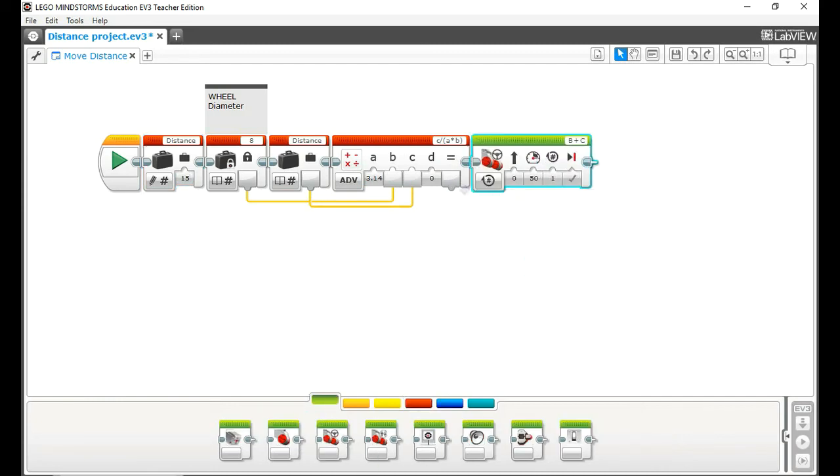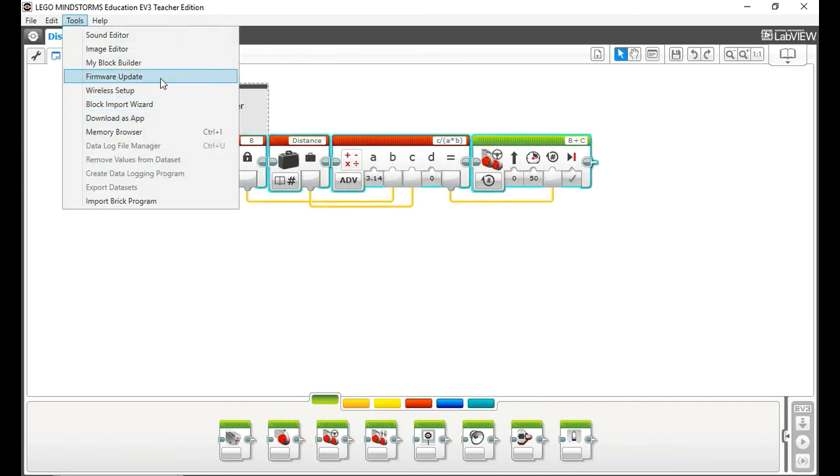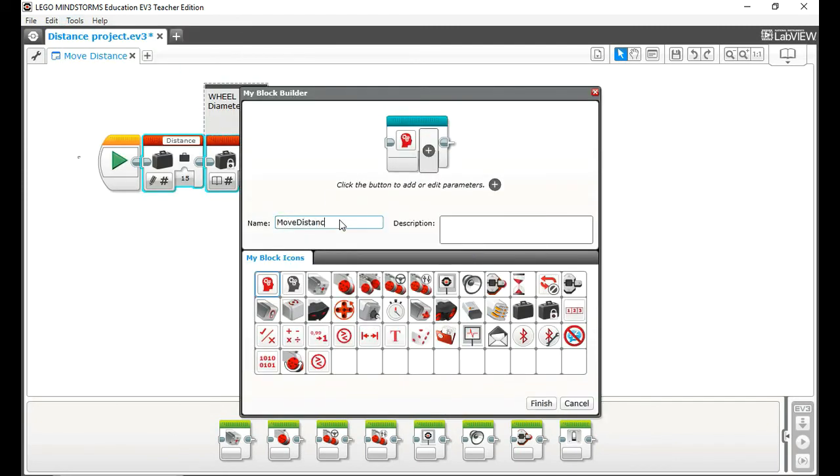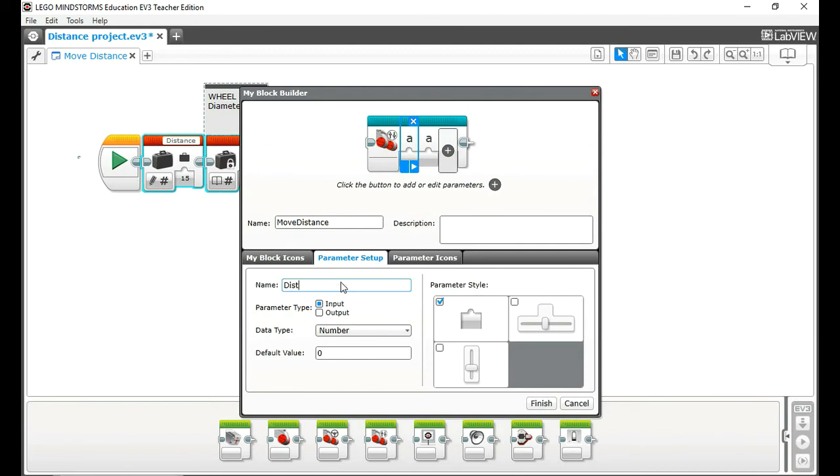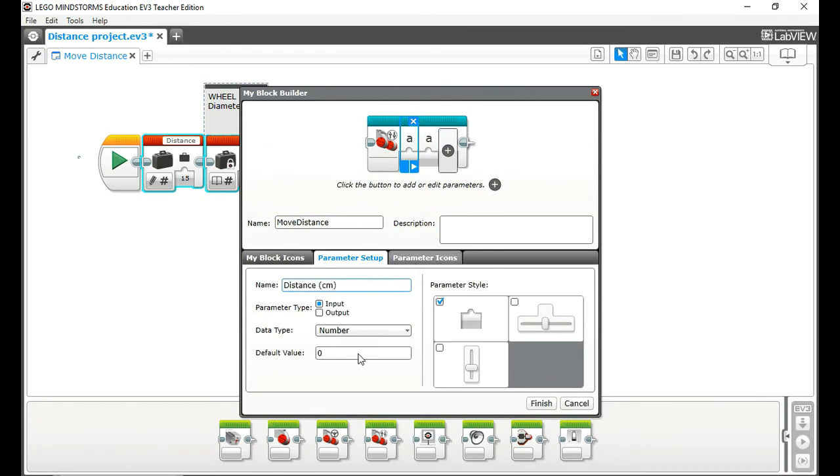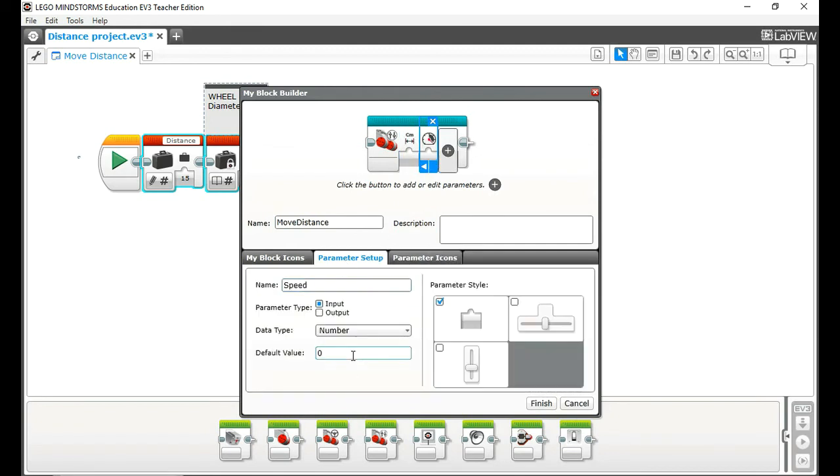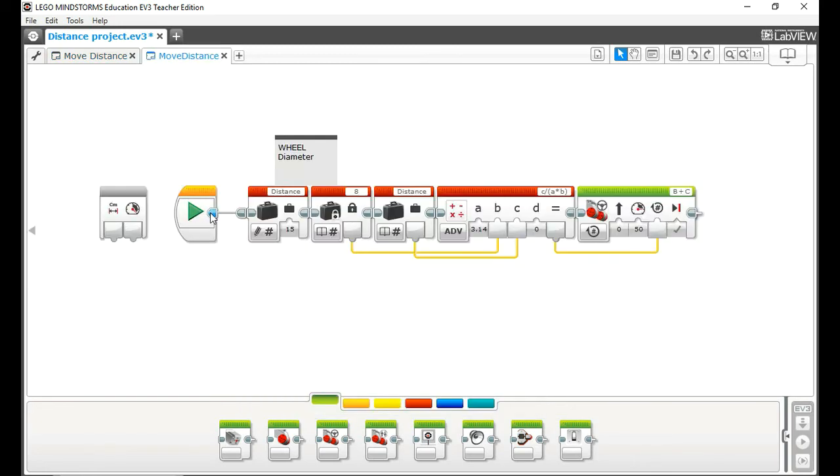Now the code is ready to be converted to my block. So using two parameters which are distance and speed and wiring everything up, we have created a distance moving block instead of the usual degrees and rotation block.